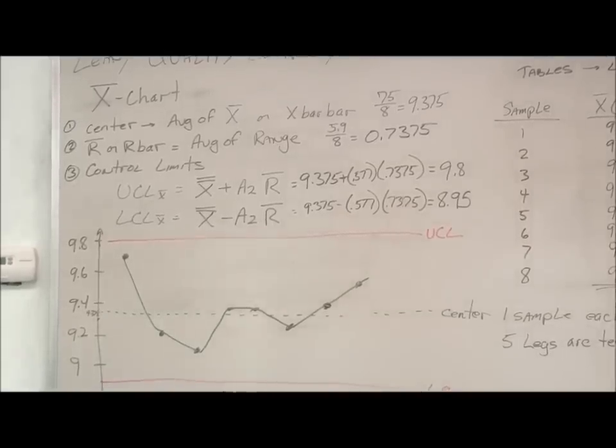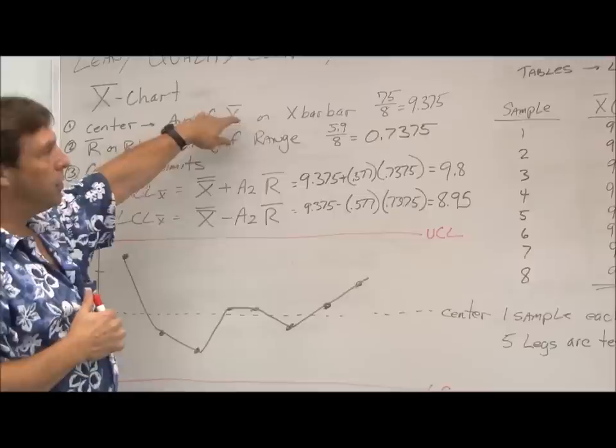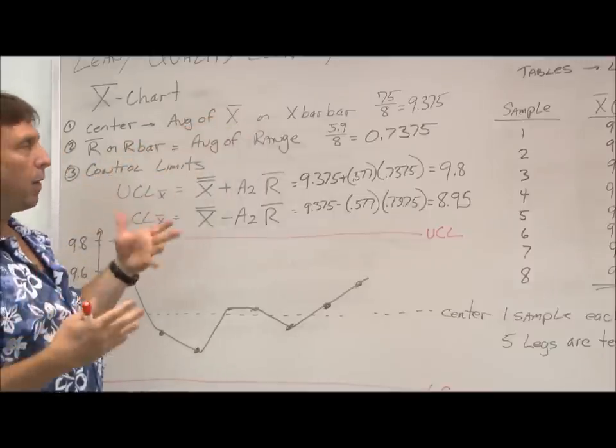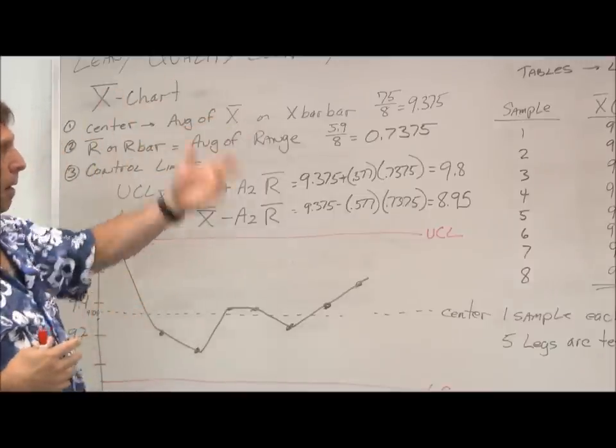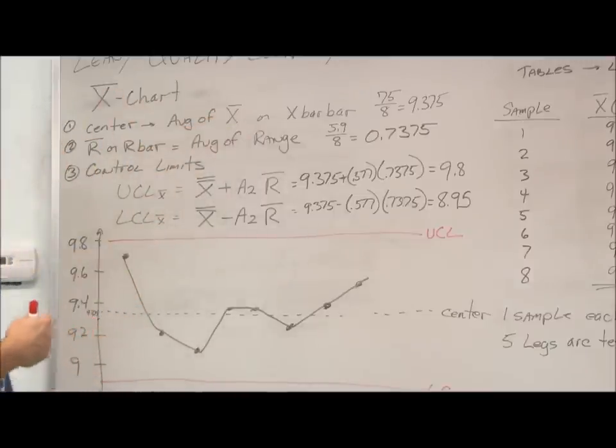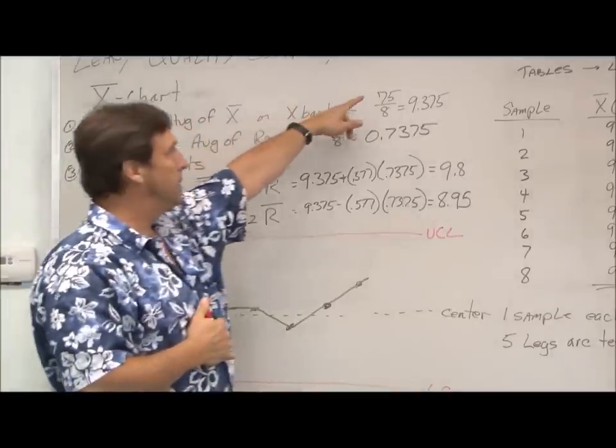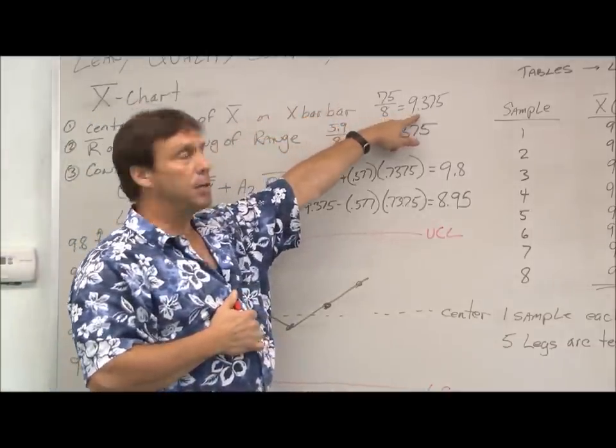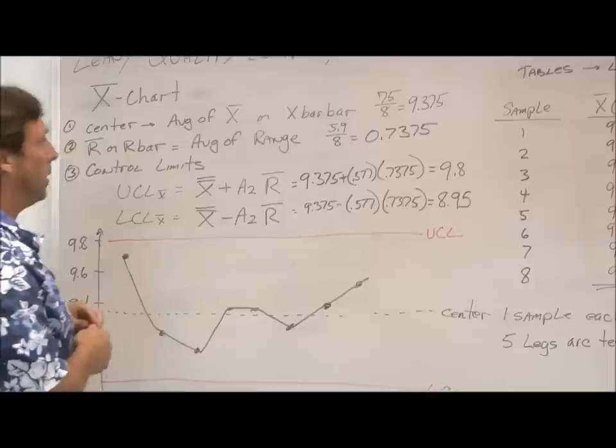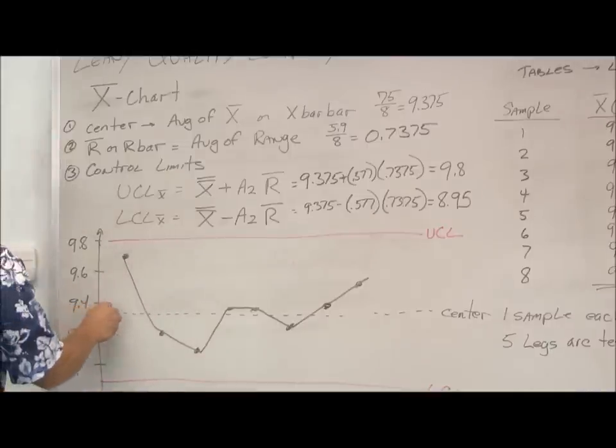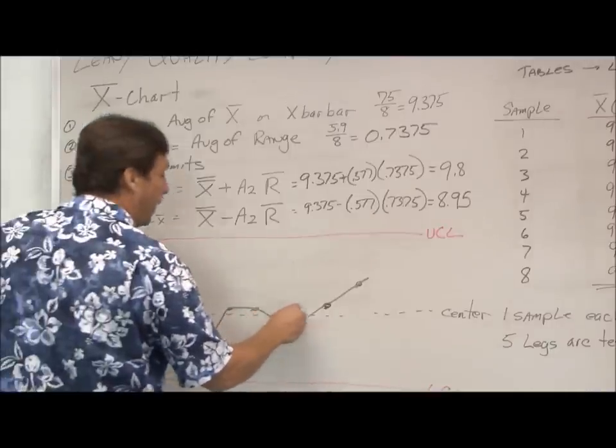So now we do the simple calculations. We calculate the center line, which is just our average of our means, so the average of our average. So we added up our means, and we know that they came to 75. We had eight measurements, so the average of our measurements is 9.375. So that's our center line right down here.